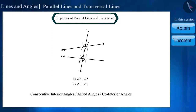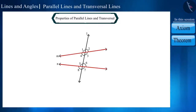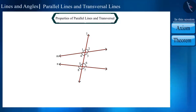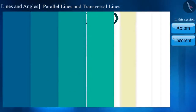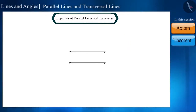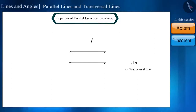Sometimes these are called co-interior angles. Friends, if these two lines are parallel — that is, if a transversal intersects two parallel lines — then can we tell if there is any relation between the angles? Let's draw two lines P and Q which are parallel to each other, and a transversal N which intersects them at points A and B respectively.